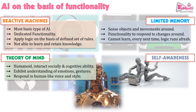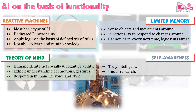The fourth type is self-awareness — machines which are truly self-aware — which actually do not exist as of now. But the artificial intelligence challenges are being overcome. We are trying to achieve machines which are truly intelligent, which are self-aware, which are able to respond and behave like humans. Research is still ongoing in this direction.